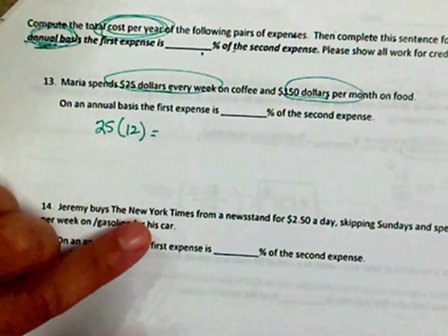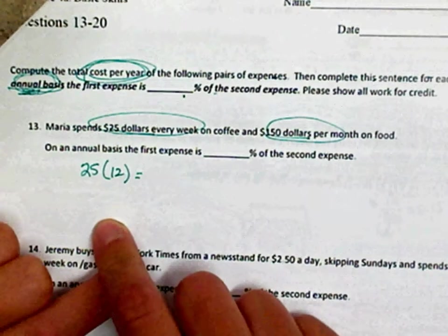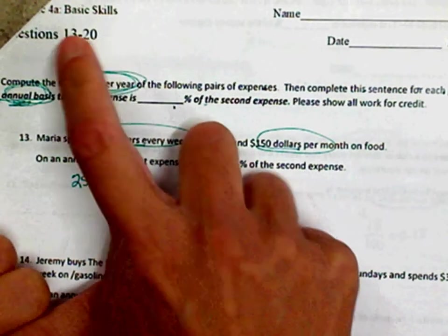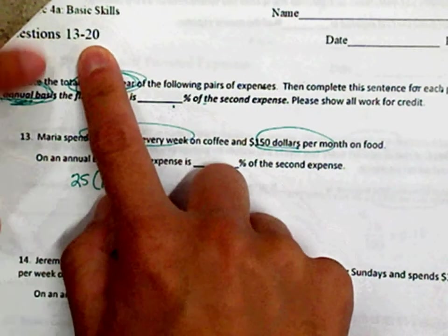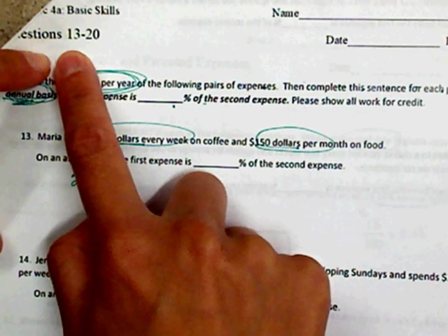Yeah, go see Mr. Humphrey. I don't think it's a choice you have, hon. All right, 4A basic skills, questions 13 through 20.